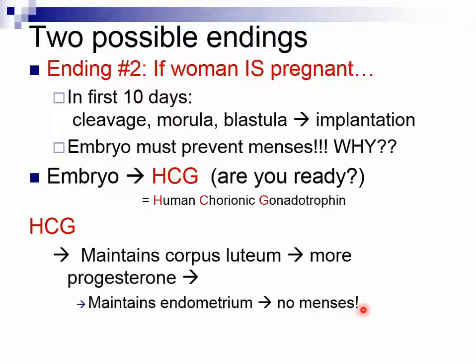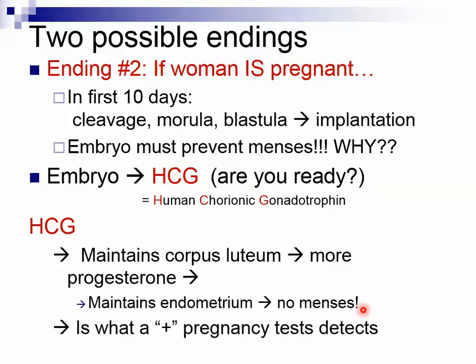This is what a positive pregnancy test detects, because HCG is a hormone traveling throughout the woman's bloodstream. A blood test for pregnancy tests for HCG directly. Your liver constantly deactivates hormones, and the deactivated form shows up in the urine — so those little kits you buy at the drugstore where you pee on something that looks like a thermometer, that's testing for inactivated HCG in the woman's urine.